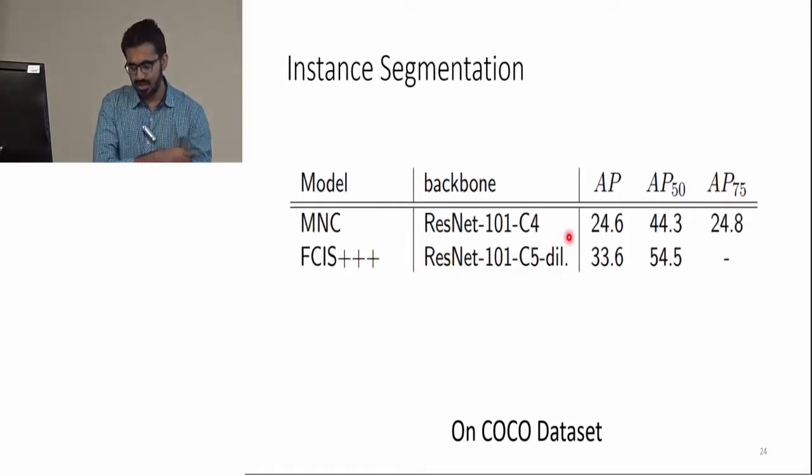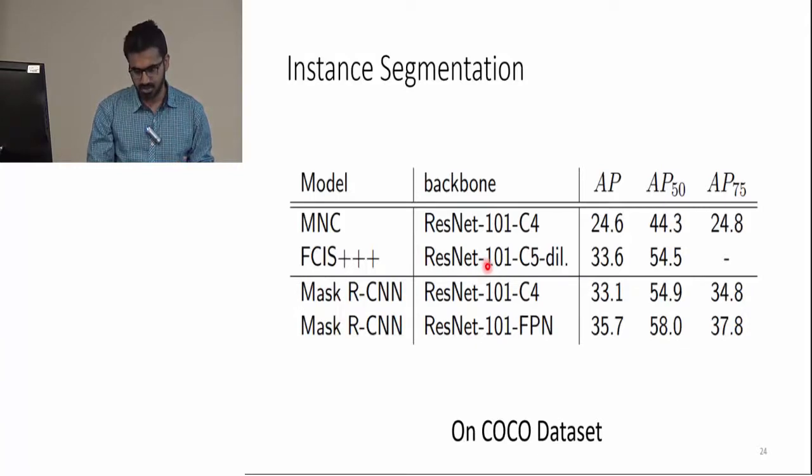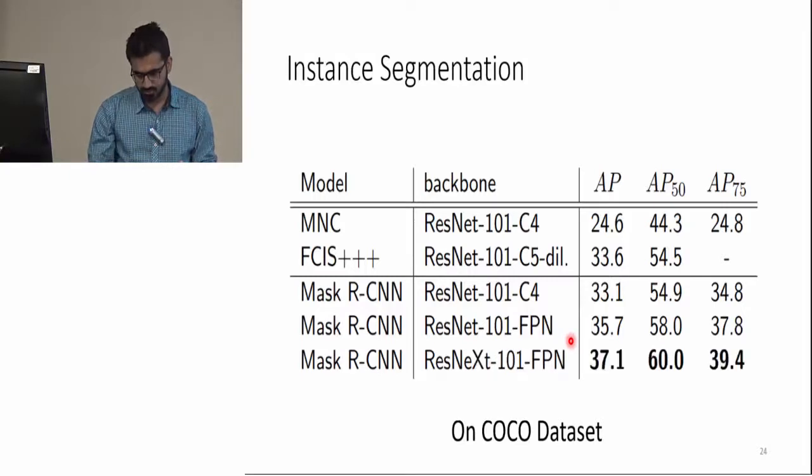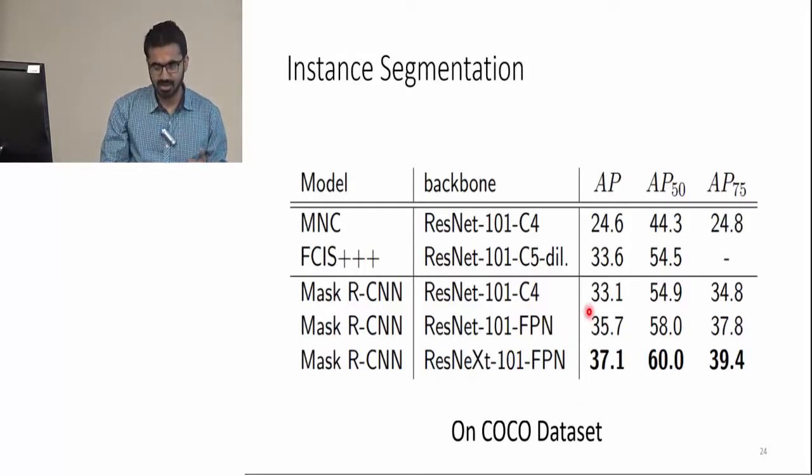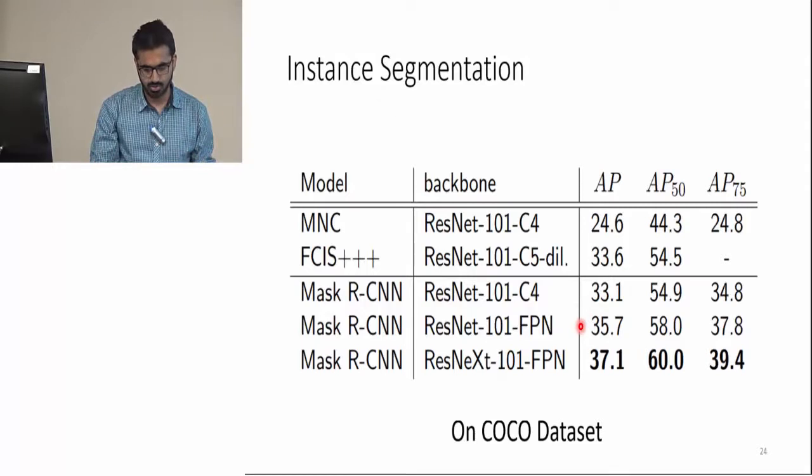These are the results of instance segmentation. The first two rows show the results for papers which were published previously. MNC here is a multitask network cascades paper, and FCIS is fully convolutional instance segmentation. You can compare them with the Mask R-CNN results. We can see that all the variants of Mask R-CNN perform better on instance segmentation on COCO dataset.